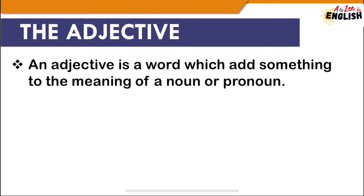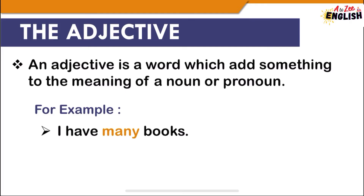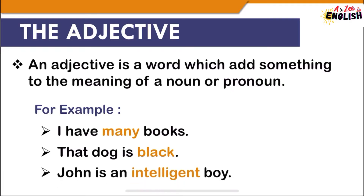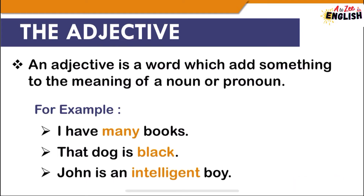For example, 'I have many books' — in this sentence, 'book' is a noun and 'many' adds meaning to this noun. Other examples: 'That dog is black' and 'John is an intelligent boy.' In all these examples, many, black, and intelligent are adjectives that describe the quality of books, dog, and boy respectively. Adjectives answer the questions: what kind, which one, or how much.